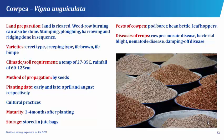Winnowing is carried out whereby broken shells or pods are removed from the beans. The pests of cowpea are the pod borer, the bean beetle, and the leaf hoppers. The diseases suffered by cowpea are the cowpea mosaic disease, bacterial blight, nematode disease, and damping off disease.